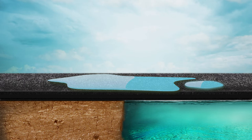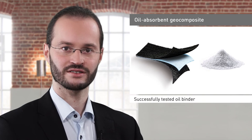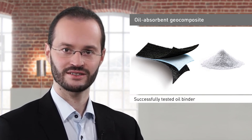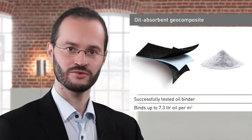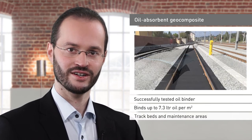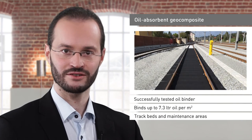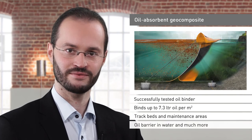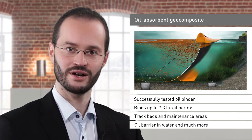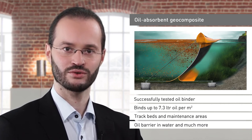In Germany, this geocomposite is listed on the list of successfully tested oil and chemical binders issued by the German Watchdog Association, GOC. Depending on the thickness of the active layer, the geotextile composite is able to bind up to 7.3 litres per square metre of oil. The product can be used in track beds, maintenance areas, as an oil barrier in water, and in many other applications as a means of preventing oil pollution directly at source.